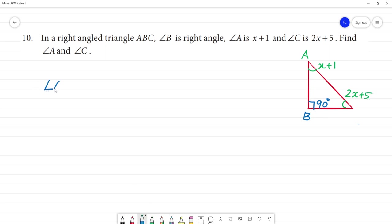Angles in property, angle A plus angle B plus angle C, that is equal to 180 degree. This is what angle sum property of a triangle.